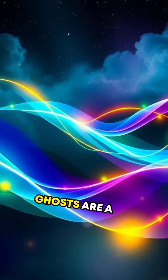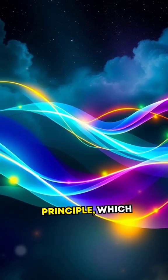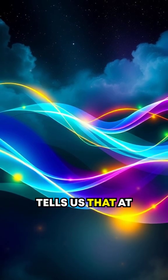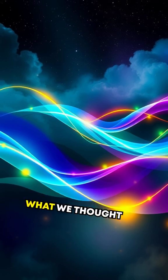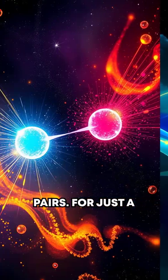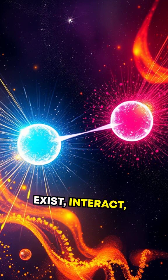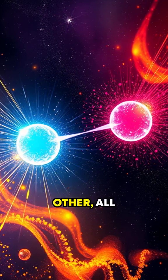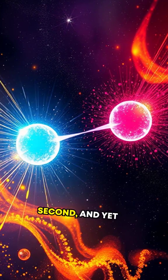These little quantum ghosts are a direct consequence of the Heisenberg uncertainty principle, which tells us that at incredibly tiny scales, energy fluctuations in what we thought was empty space give birth to particle-antiparticle pairs. For just a fleeting moment, these pairs exist, interact, and then annihilate each other, all happening in less than a billionth of a billionth of a second.